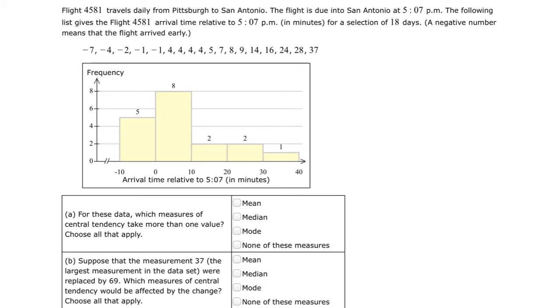In this example, we have Flight 4581 that's traveling from Pittsburgh to San Antonio. The flight is due into San Antonio at 5:07 PM, and the following list gives the Flight 4581 arrival times relative to the 5:07 PM in minutes for a selection of 18 days. A negative number means the flight arrived earlier.